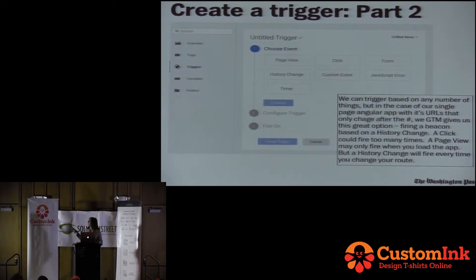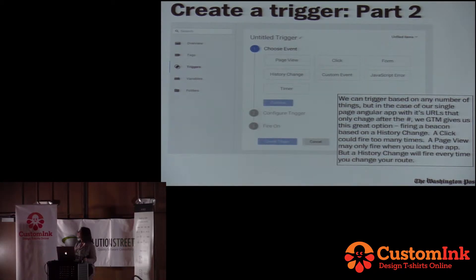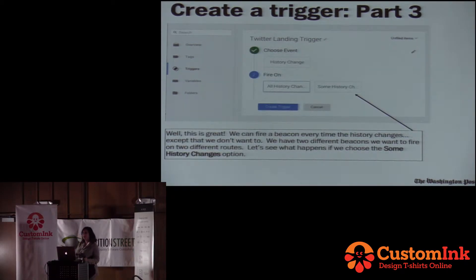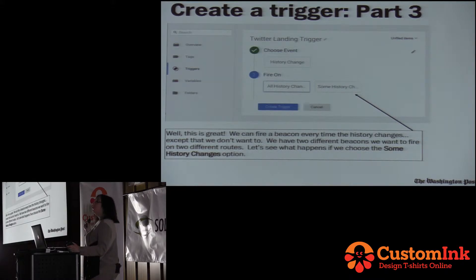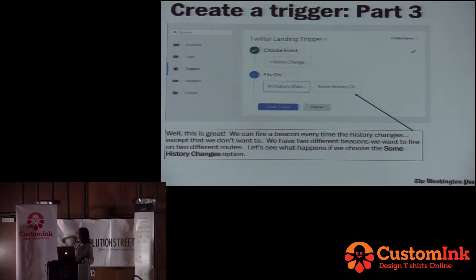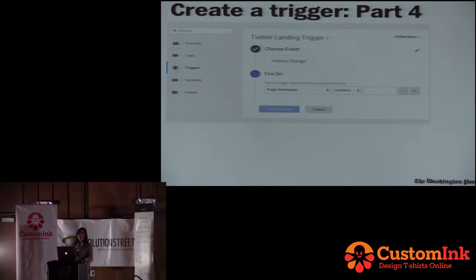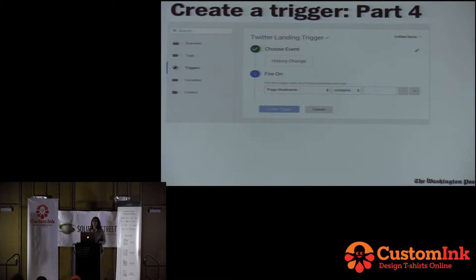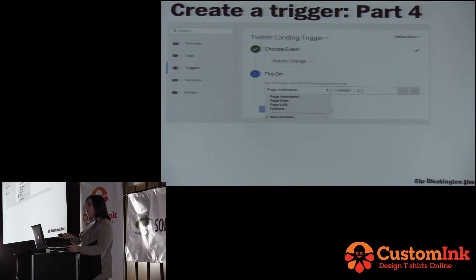So we need to create a trigger. There are a lot of things you can do: you can make it fire on a page view, on a click event, based on history change, custom events, a JavaScript error, even a timer. In our case — a single-page app, especially a bare-bones Angular app — we are looking for history changes. We're looking for changes to anything after that pound sign, because that's going to show that our route has changed. We can select all history changes, or in our case we have two different pixels to fire.